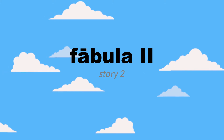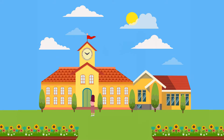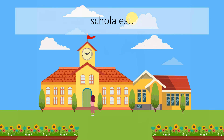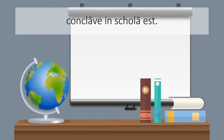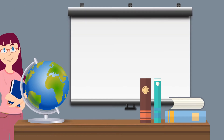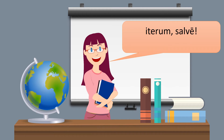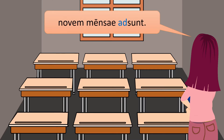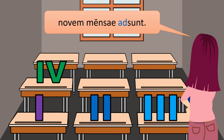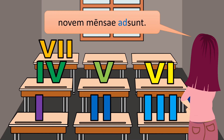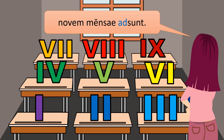Fabula secunda. Schola est. Conclave in schola est. Iterum: ad sum in conclavi meo. Novem mensae ad sunt: una mensa, duae mensae, tres, quattuor, quinque, sex, septem, octo — novem mensae ad sunt.